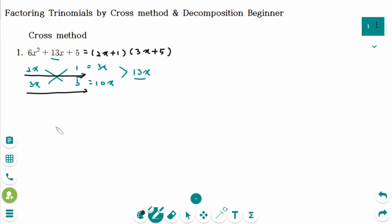Because the question again here, like this, I want to change the order. So 3x times 2x makes 6x squared, and 1 times 5 makes 5. But when you cross multiply, this one is 2x, then 15x.